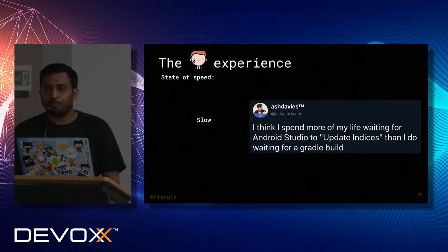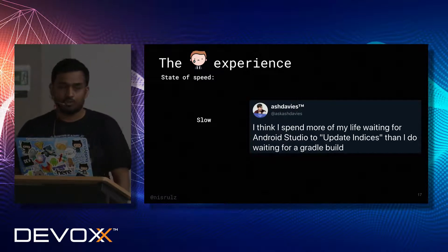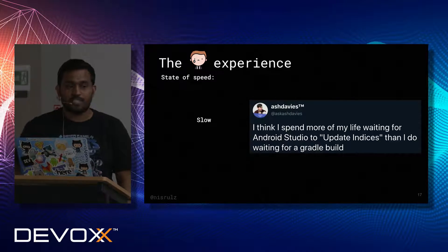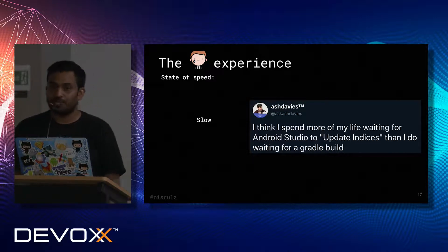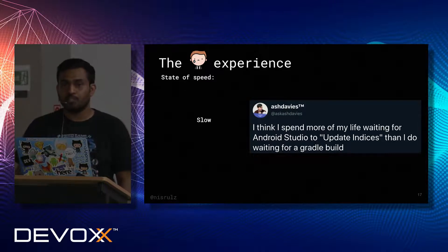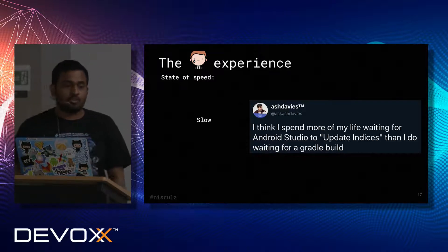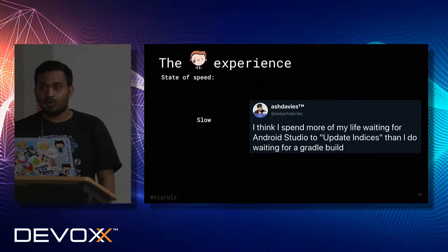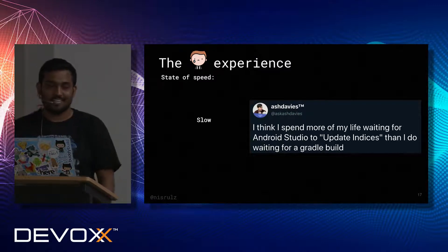Android Studio was very slow for me, and it turns out it's slow for a lot of other people. There's a tweet from one of the GDEs saying he spends most of his life waiting for Android Studio to update indices and then waiting for a Gradle build. Android Studio needs to build a map of your code base every time code changes so it can provide code intentions and suggestions on the fly. That's why it keeps updating indices. If you make more changes, it updates the index again — it's a forever loop.